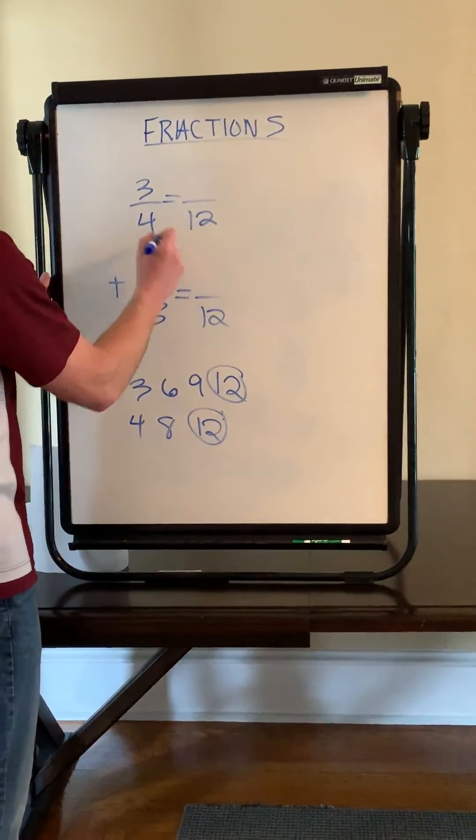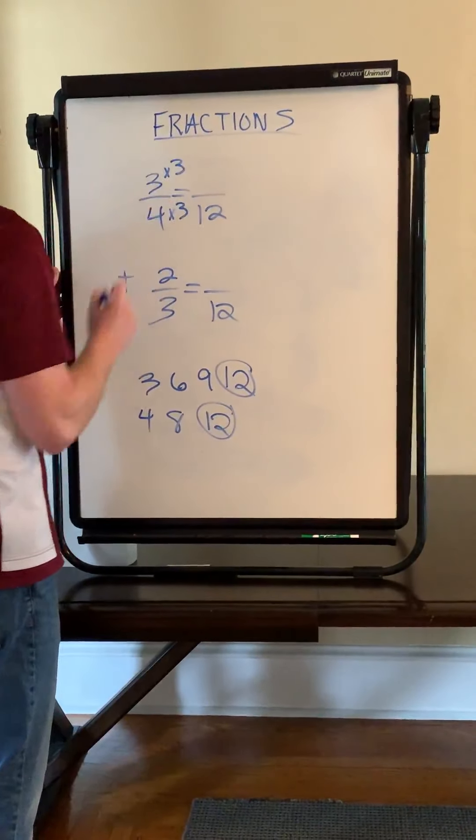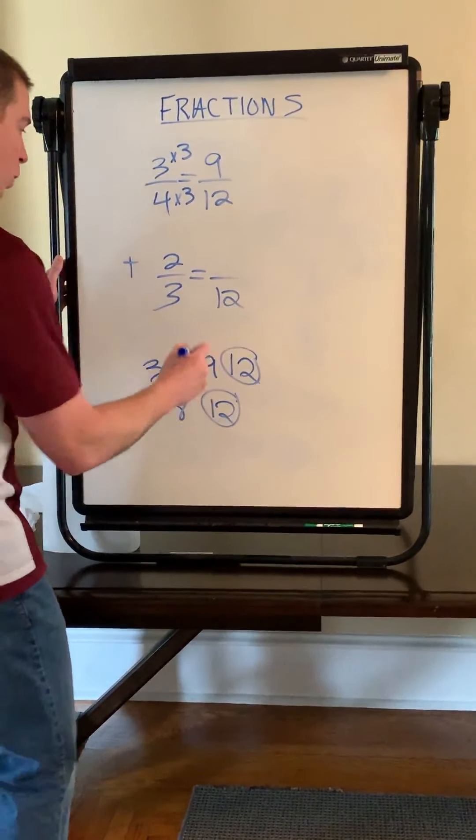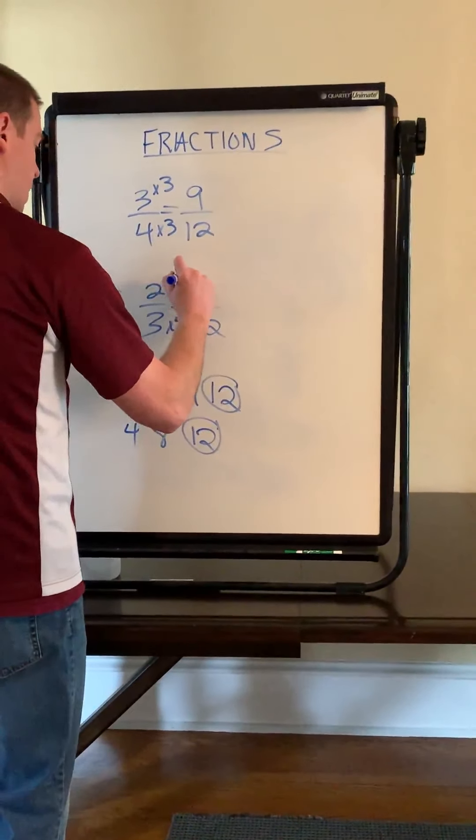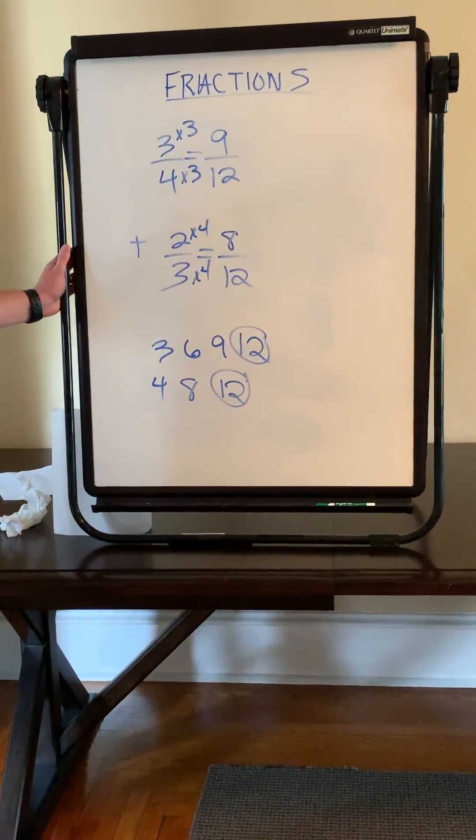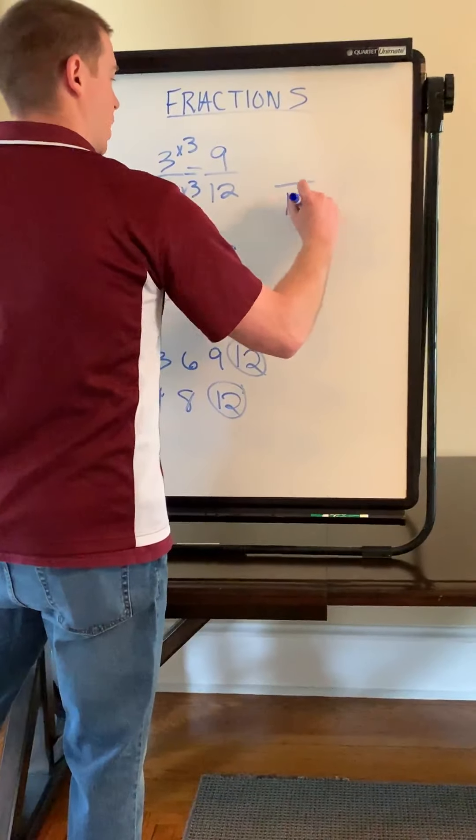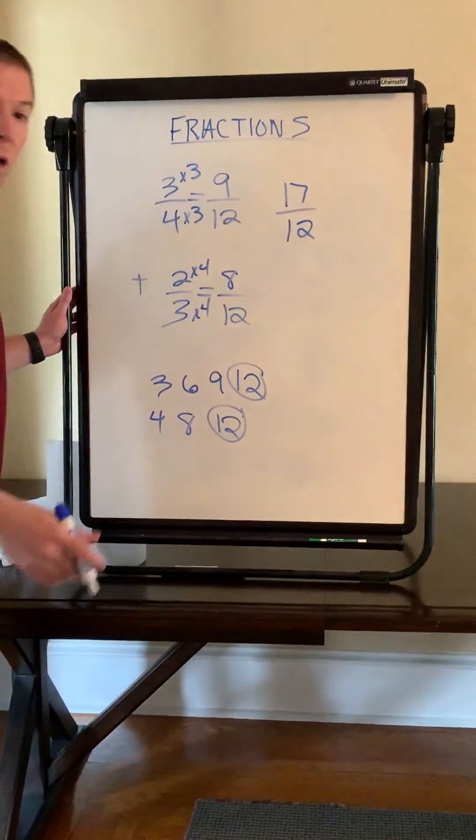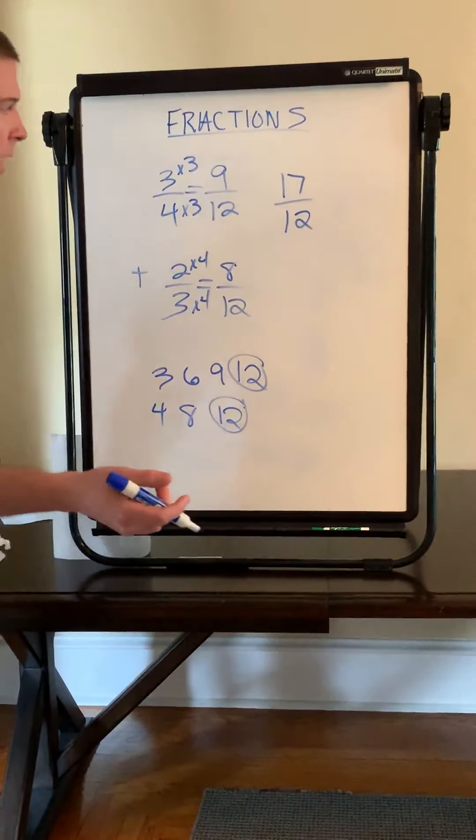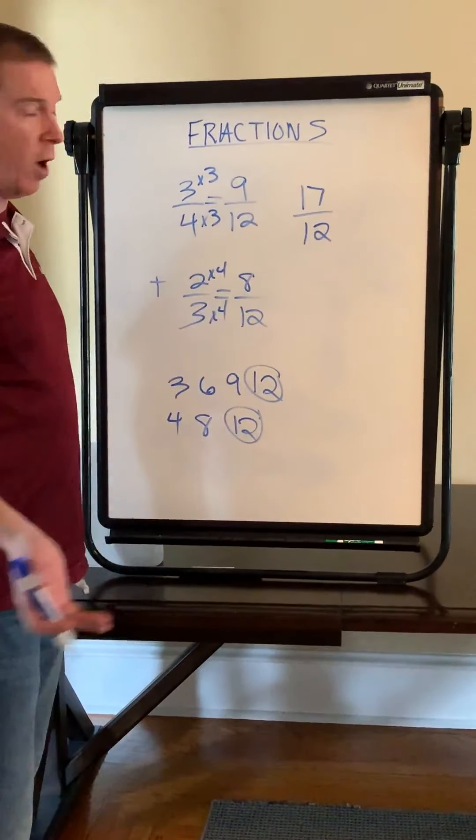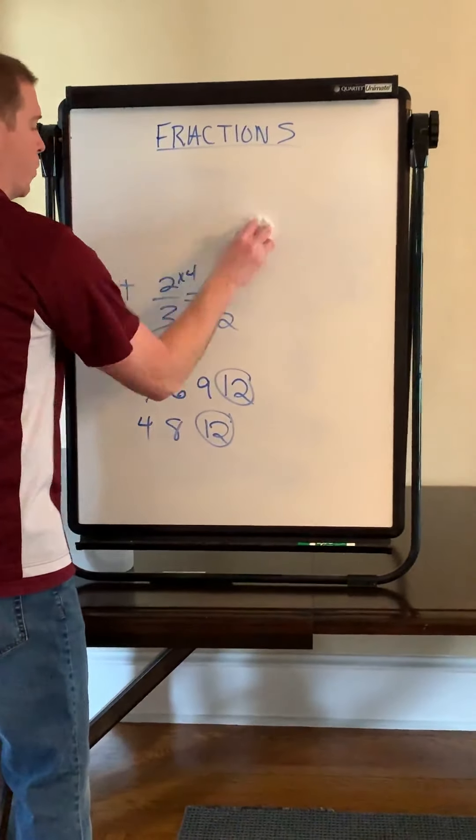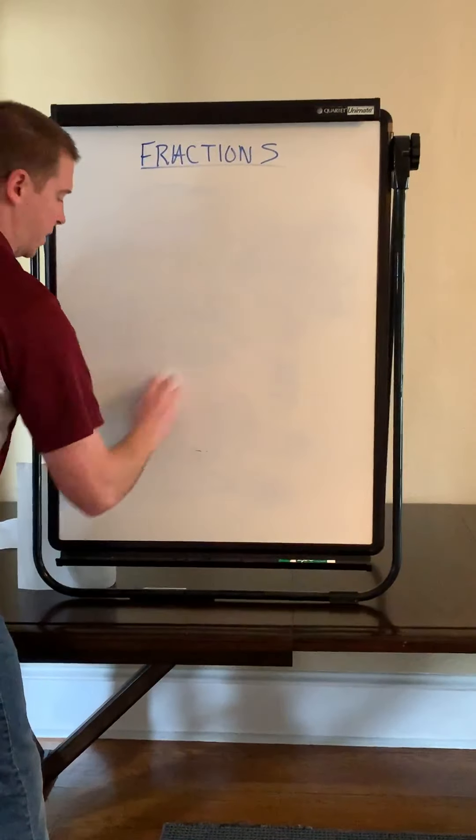How can I go from a 4 to a 12? Multiply it by 3. Need to do the same thing to the numerator. 3 times 3 is 9. 9/12. Down below, how do I go from a 3 to a 12? Times 4. You need to do the same thing to the top. 2 times 4 is 8. So my new problem now is 9/12 plus 8/12. Okay, keep the 12. 9 plus 8 is 17. 17/12 is a good answer. It's a correct answer. It's not a great answer. We can do a little better. The reason it's not a great answer, it's an improper fraction. Improper fraction means the top is bigger than the bottom. So we can fix that.